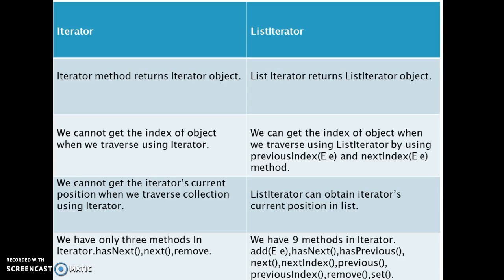We have only 3 methods in the iterator: hasNext(), next(), and remove(). But we have 9 methods in list iterator: add(), hasNext(), hasPrevious(), next(), nextIndex(), previousIndex(), previous(), remove(), and set(). These are the 9 methods defined in list iterator, compared to only 3 in iterator.